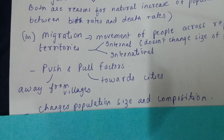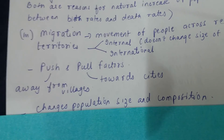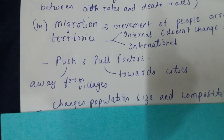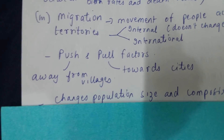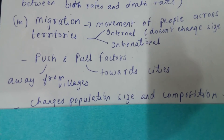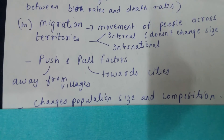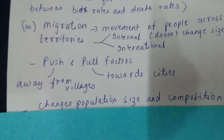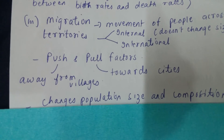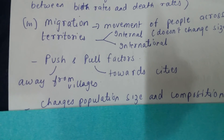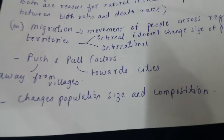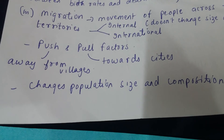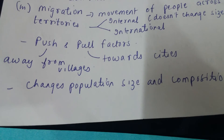Migration happens due to two factors: push factors and pull factors. A push factor is when you feel there is nothing good where you are — say you feel Cuttack has nothing to offer and you want to go to Delhi to study. A pull factor is when a destination attracts you — Delhi or Mumbai have more opportunities, so people move there. Cities like Cuttack attract people from villages because they offer jobs. Push and pull factors change both population size and composition. Size simply refers to the number — 10 becoming 9 or 10 becoming 20.